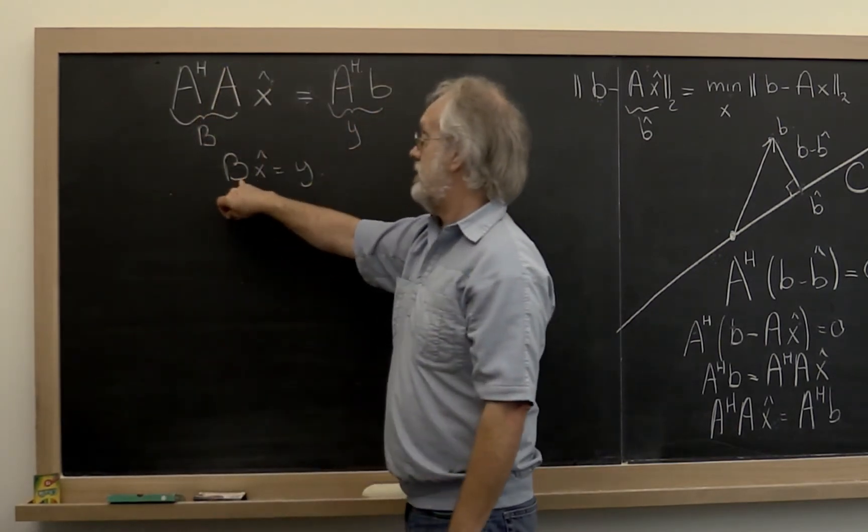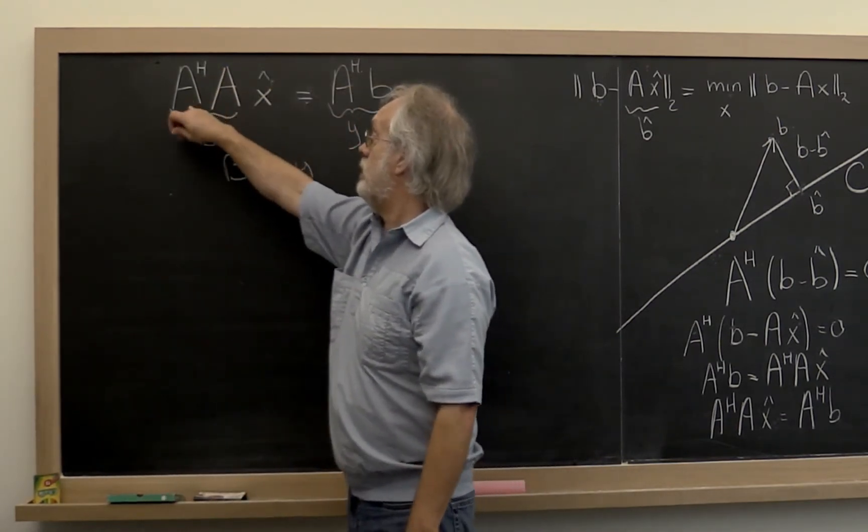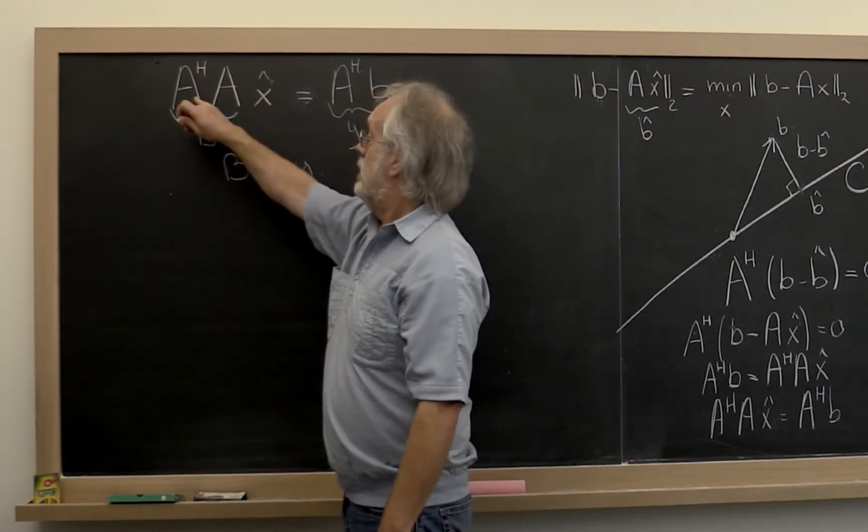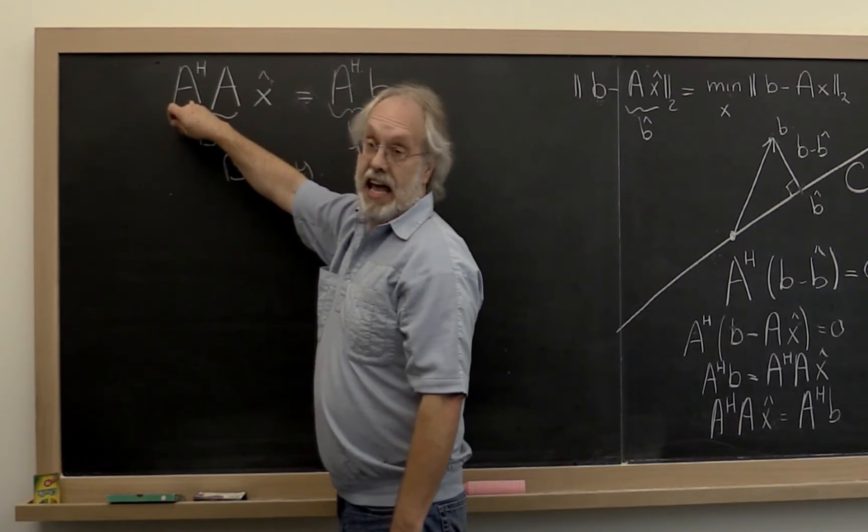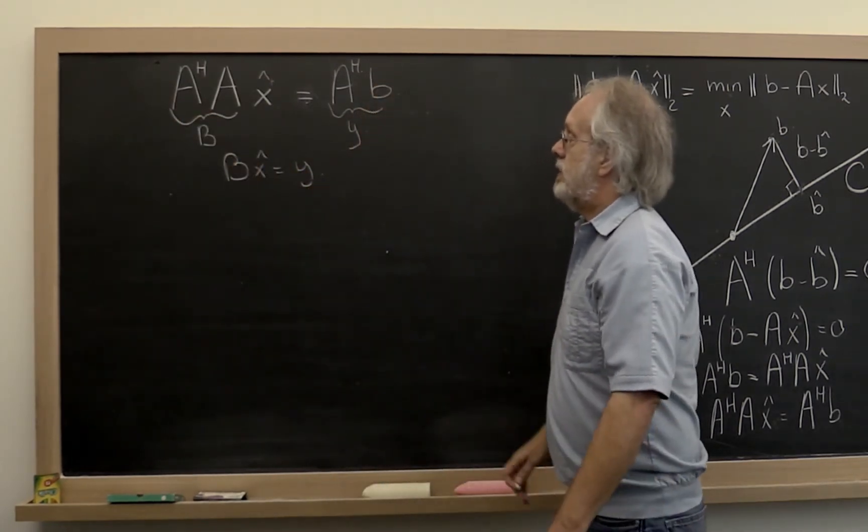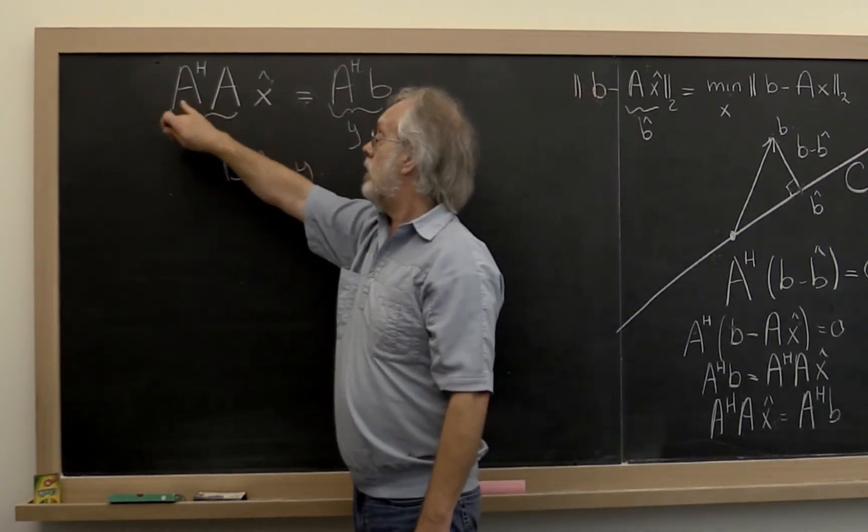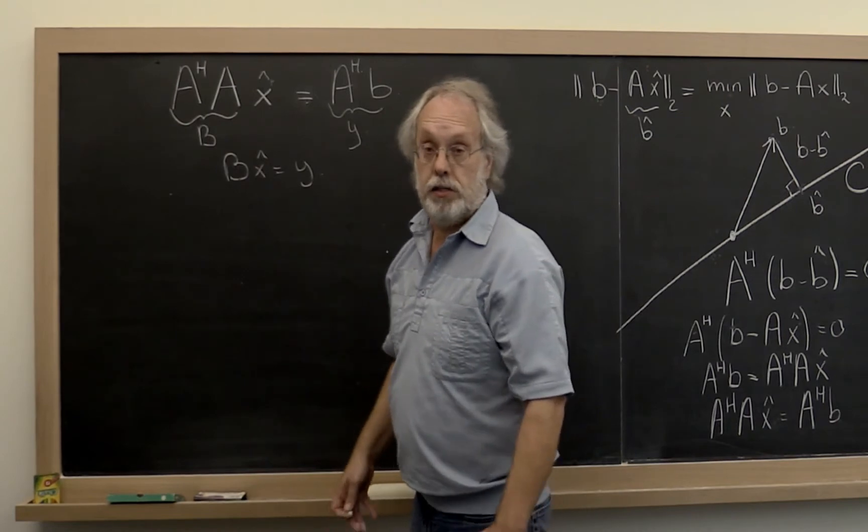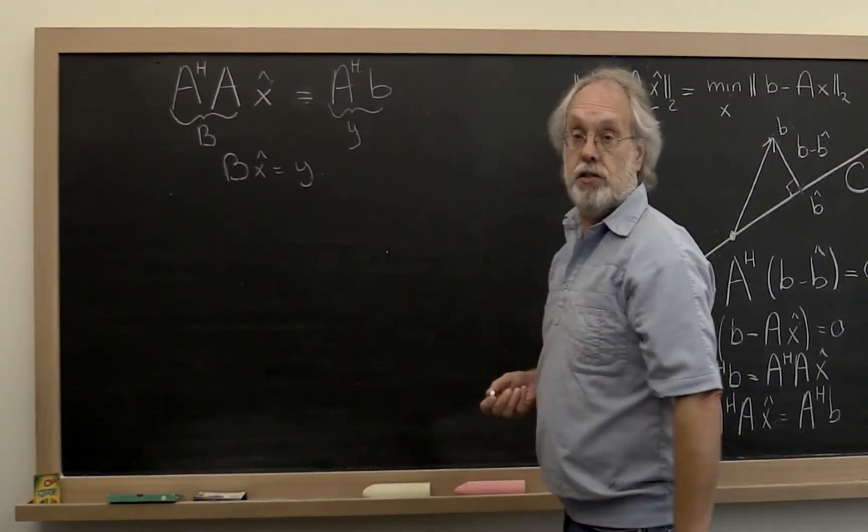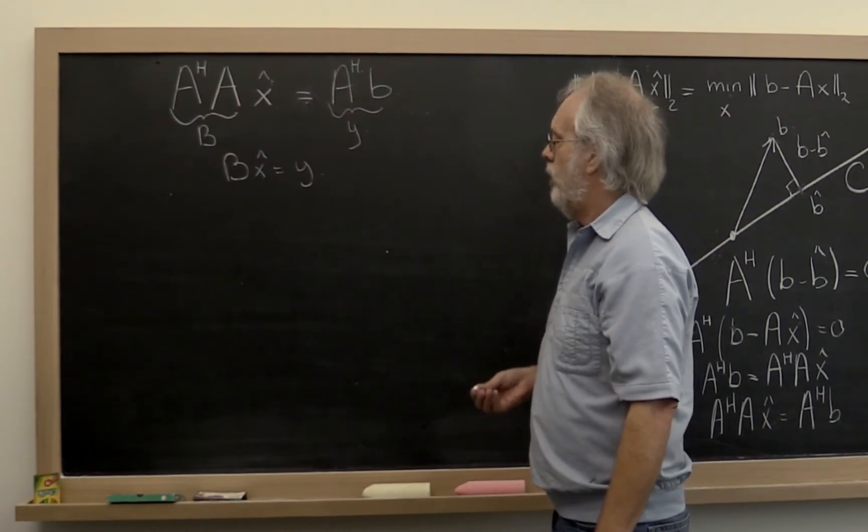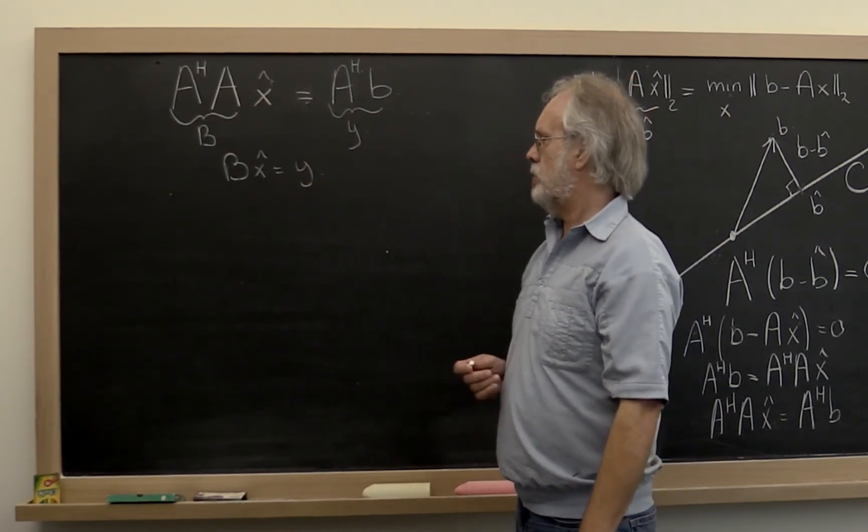And then what we're left with is having to solve B times x hat is equal to y. And notice that B is now a square matrix because A Hermitian transpose times A gives you a square matrix. If A is m by n, then this matrix is n by n. And we already commented on the fact that if A has linearly independent columns, then B is a non-singular matrix. And therefore, we know that this has a unique solution. Now, the question now becomes, how do we solve this?